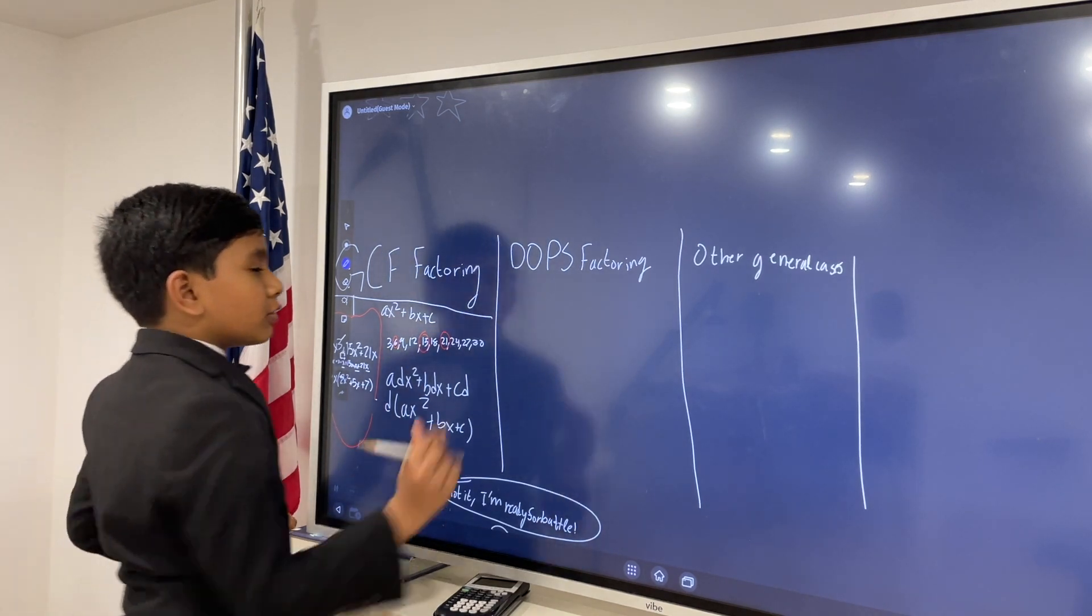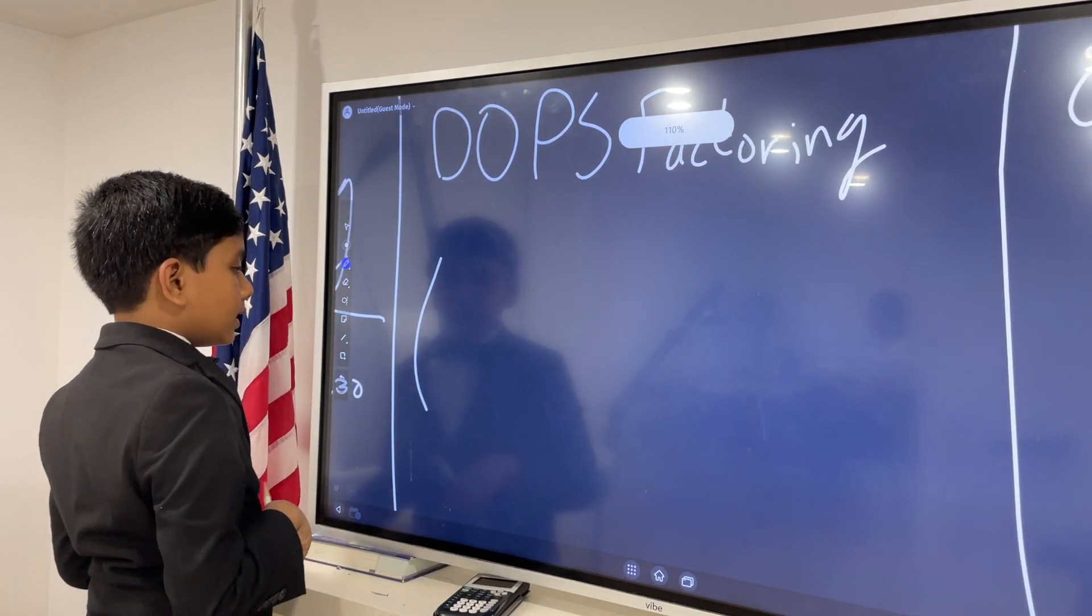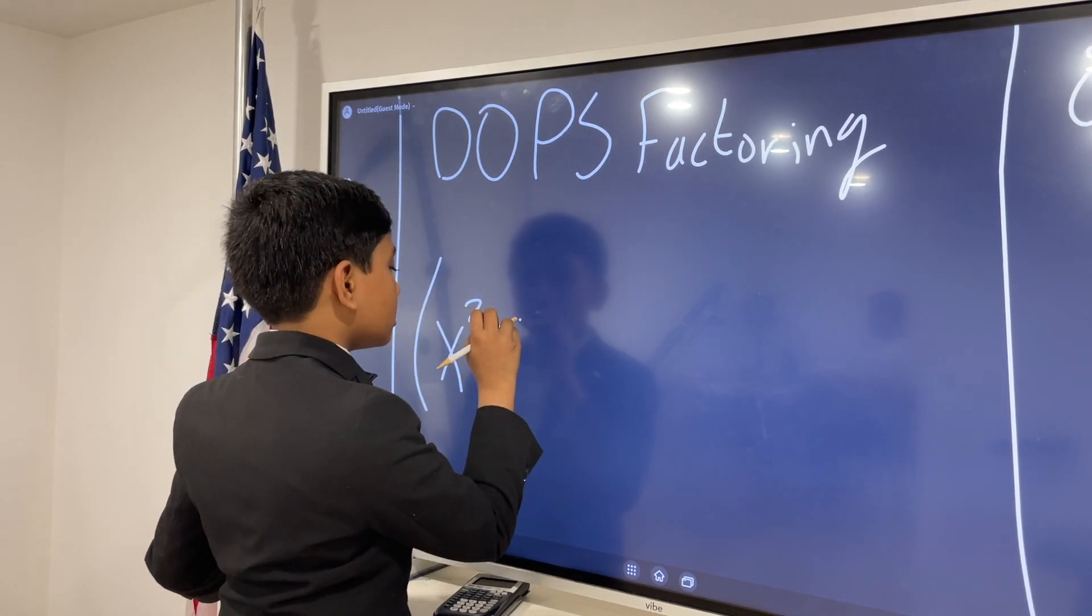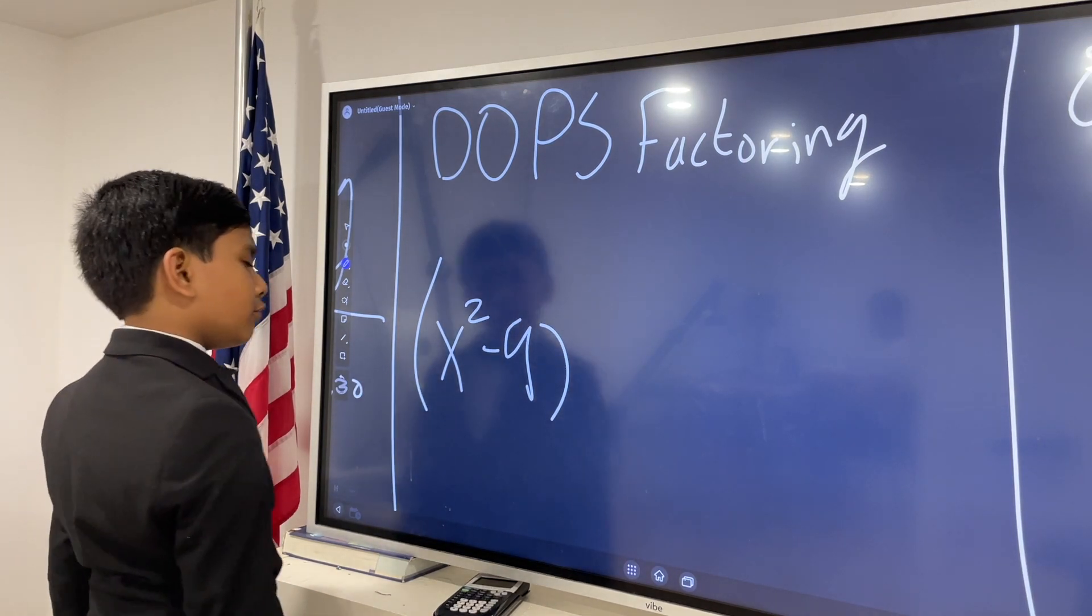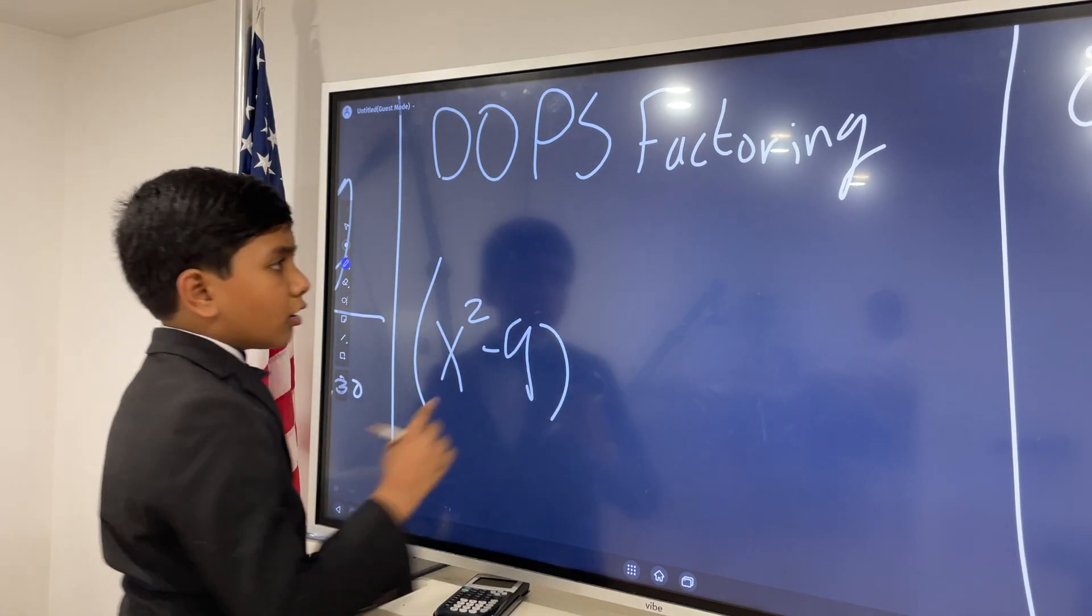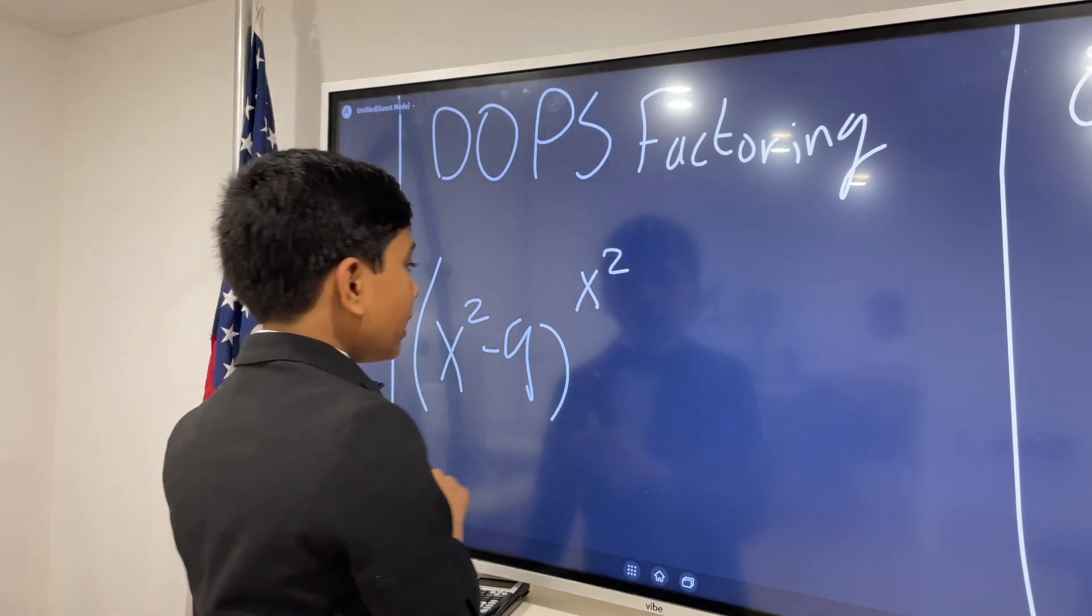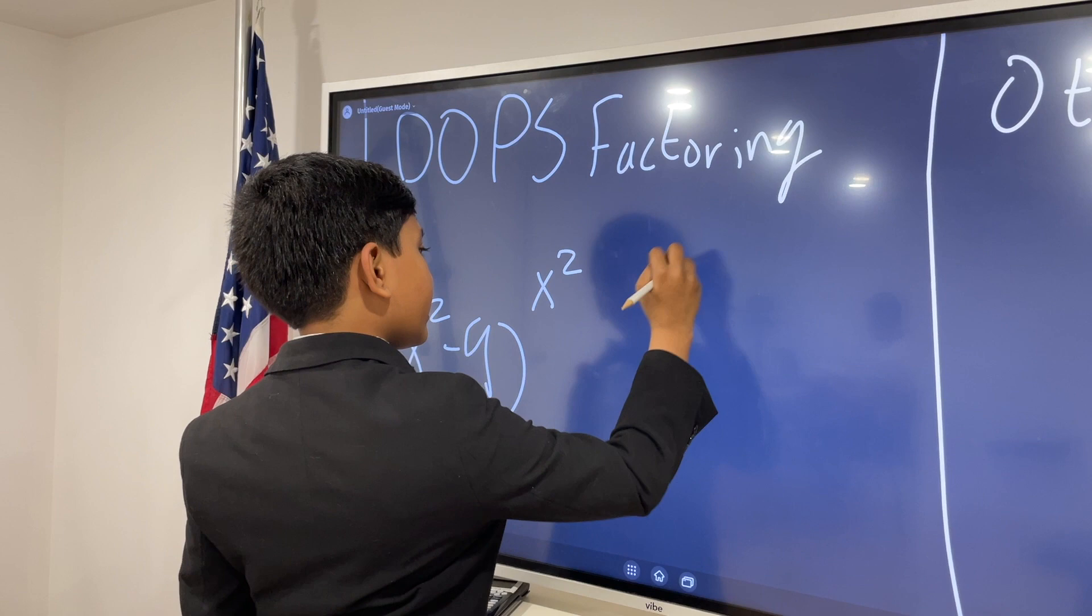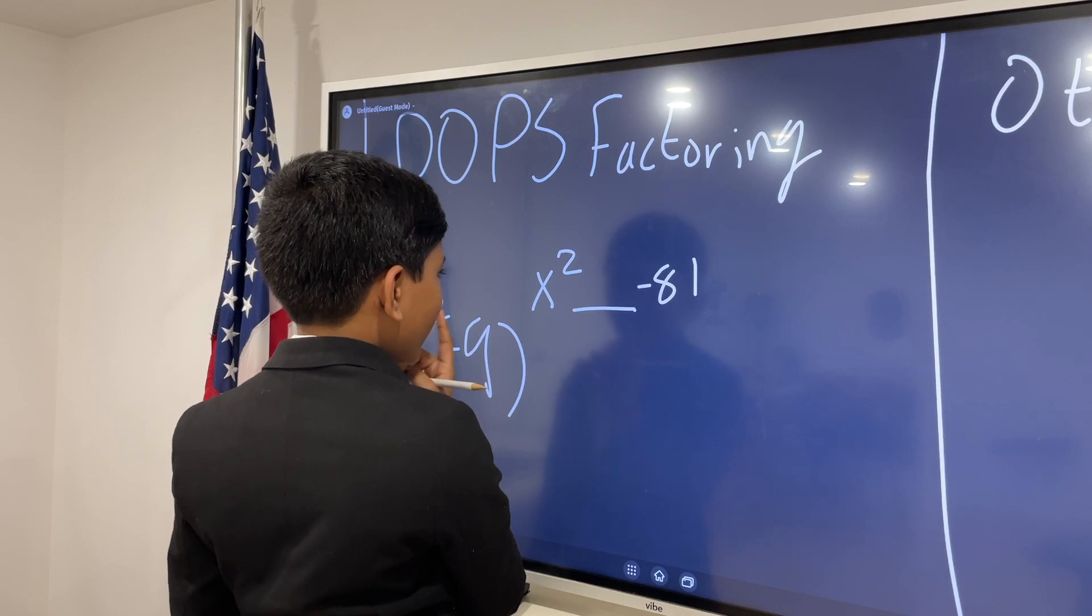What's DOPS factoring? Well, DOPS stands for difference of perfect squares. So, what does that mean? Let's say we have x squared minus 9. If we have x squared minus 9, then how do we factor it? It seems impossible. Or does it? Let's try something. Keyword: try. Maybe we can get a hint, maybe a clue at this. If we do something like x squared blank negative 81.